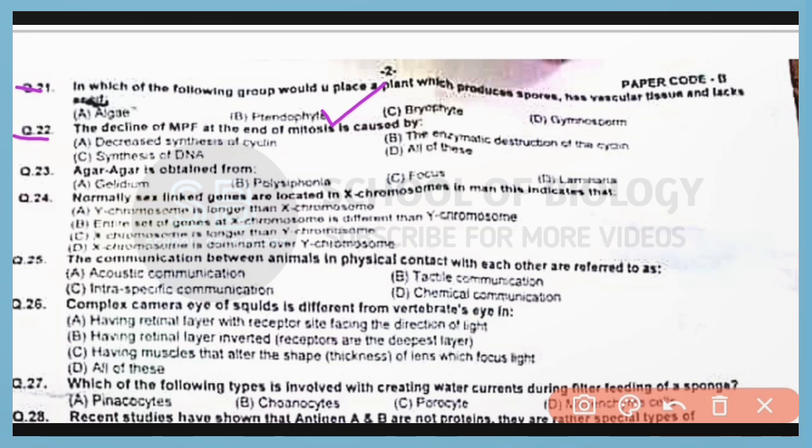Question number 22. The decline of MPF, mitosis promoting factor, at the end of mitosis is caused by the enzymatic destruction of cyclin. Correct answer is option B.